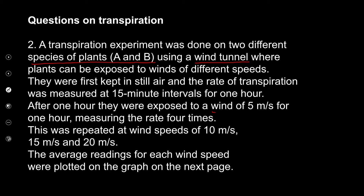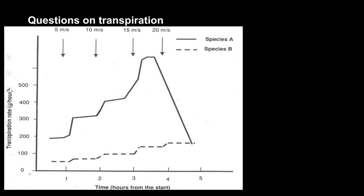The wind speeds were 5, 10, 15, and 20 metres per second, plus still air — giving five readings. These were used to draw a graph showing transpiration rate over time, with changes corresponding to different wind speeds. As wind speed increases, the rate of transpiration increases. But does this occur the same in both plants? Species A shows a large increase, while species B remains much lower at the bottom. So species B has something that means it doesn't transpire too much, whereas species A transpires heavily in the wind.